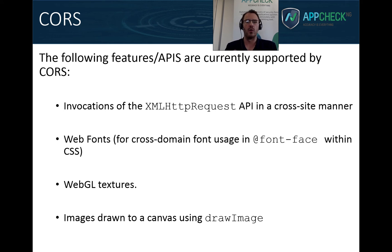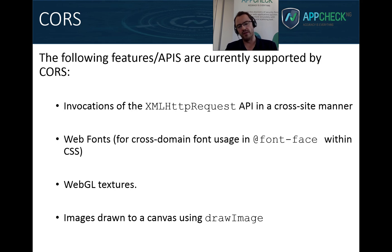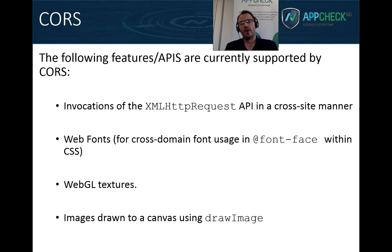Where would we use CORS? There are a number of different areas. XMLHTTPRequest is an API call typically used for AJAX requests in JavaScript, allowing us to make requests to other resources and read responses. This is the most commonly encountered method. CORS is also supported for loading web fonts in CSS, using within WebGL textures, and images drawn on a canvas using drawImage. Most of what we're concerned with is JavaScript being able to make a request to an origin outside its own and receive and read the response.